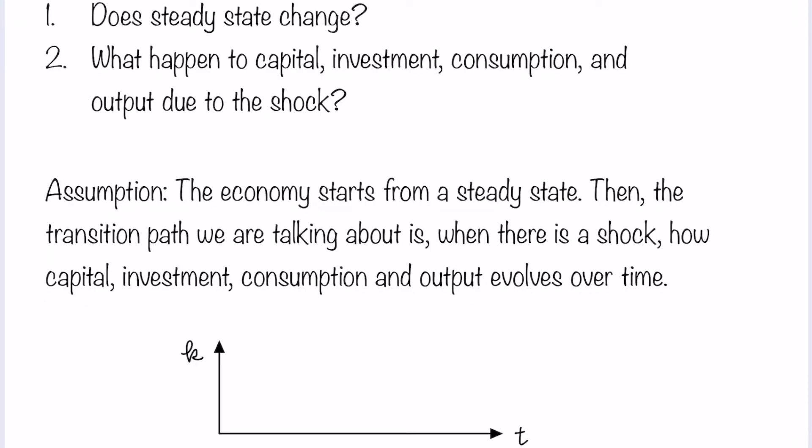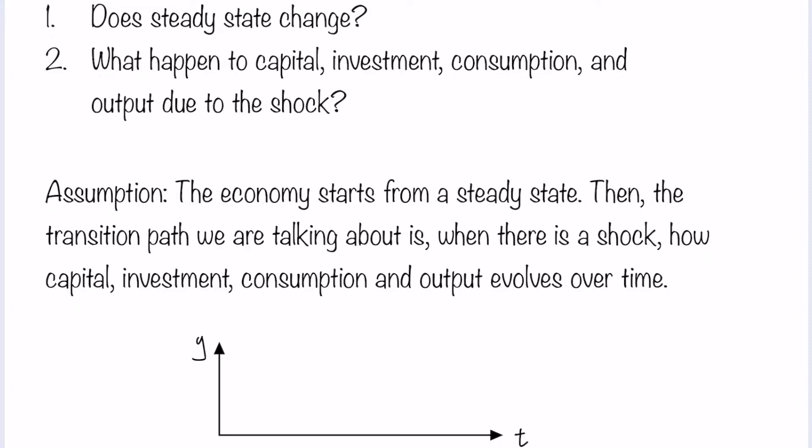In the transition path diagram, the horizontal axis is time and the vertical axis is the variable we are interested in. If we are interested in capital stock per capita, then we put capital stock per capita there. If we are interested in consumption, investment, and output, then we replace the vertical axis with, for example, output per capita, consumption per capita, and investment per capita.